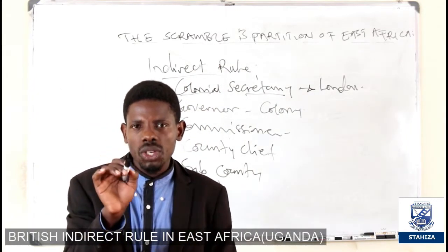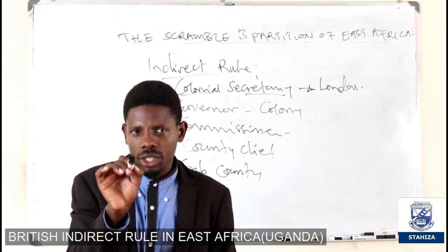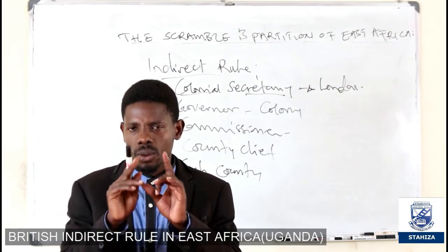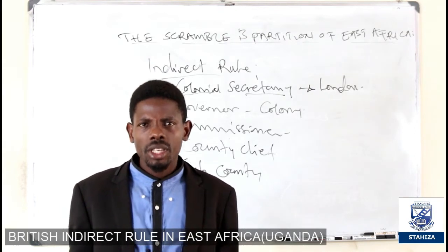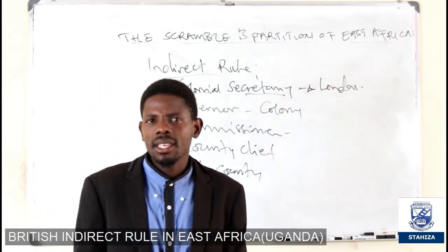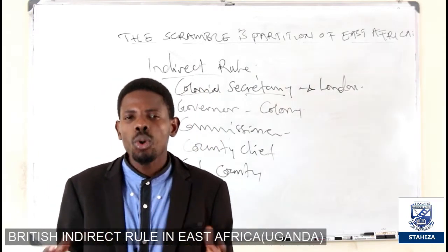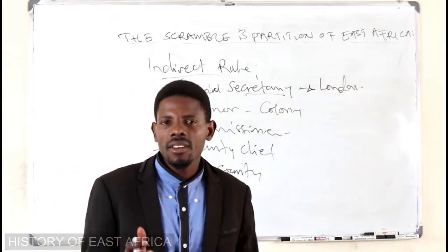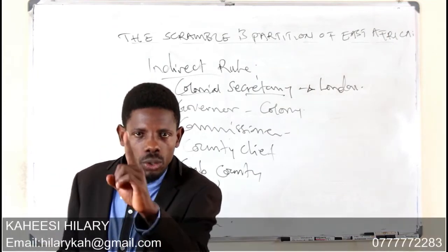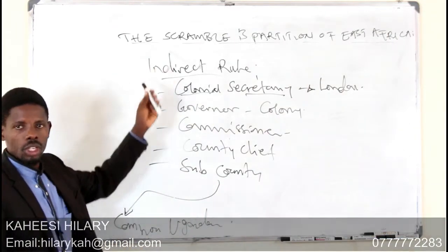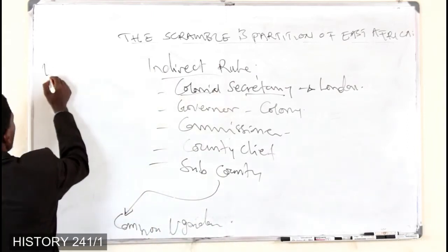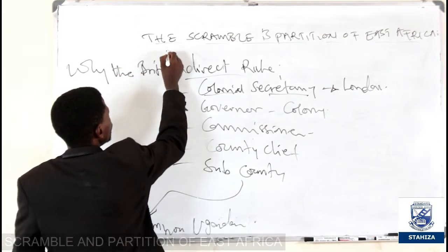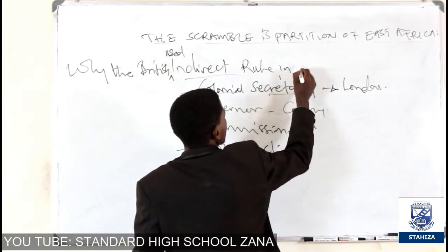Today we want to see why the British decided to apply indirect rule in their colonies, particularly in Uganda. Why did they not use the assimilation method like the French? Why did they not use the association policy like the French after they left assimilation? Why did they use indirect rule? So today we are going to look at why the British used indirect rule in Uganda.